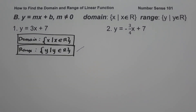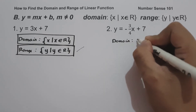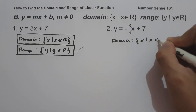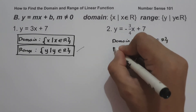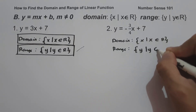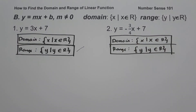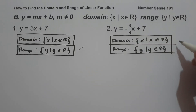On example number two, we have y equals negative 3 over 4x plus 7. As you can see, the given equation is written in the form of y equals mx plus b. The domain is the set of values of x such that x is the set of all real numbers, and the range is the set of y values such that y is the set of all real numbers. To find the domain and range of the inverse linear function, since the domain and range is the set of all real numbers, the domain and range of the inverse linear function is also the set of all real numbers.